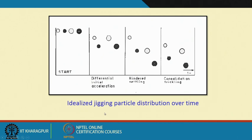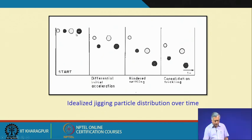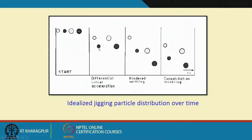There is an idealized jigging particle distribution over time: initially all particles are at the same height, then differential initial acceleration occurs. This is interesting because although we talk about settling velocity, the settling time is so short — at 300 cycles per minute — that particles are not given appropriate time to reach terminal settling velocity. We are applying differences in accelerating velocity, not terminal settling velocity. This is followed by hindered settling mode and then consolidation trickling.